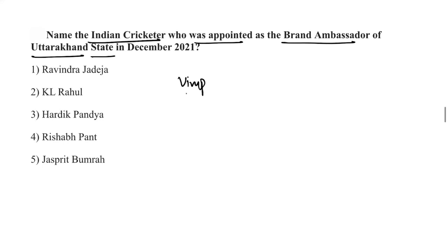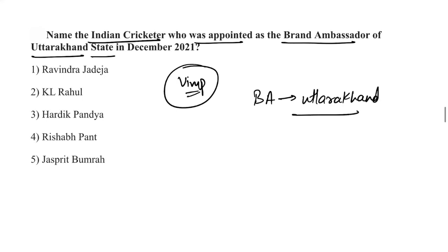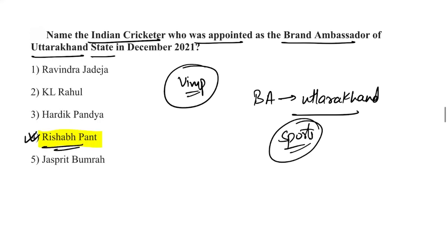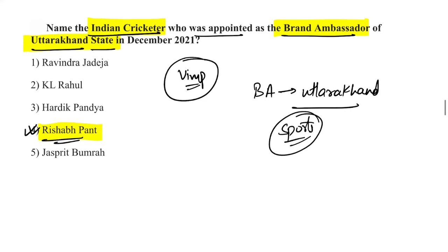Indian cricketer Rishabh Pant was appointed as the Brand Ambassador of Uttarakhand state in December 2021 to create awareness about sports among the youth. Chief Minister Pushkar Singh Dhami made the appointment. Also remember that Nanda Devi Biosphere Reserve is located in Uttarakhand.